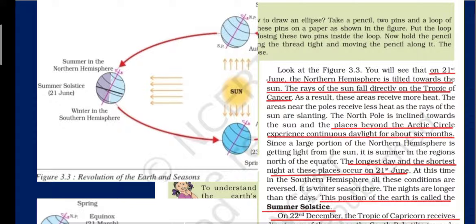On 21st June, the northern hemisphere is tilted towards the sun. The rays of the sun fall directly on the Tropic of Cancer; as a result, these areas receive more heat. As you can see, I have drawn the equator dividing the earth into the northern and southern hemispheres. On 21st June, the northern hemisphere is tilted more towards the sun than the southern hemisphere, and the sun rays fall directly on the Tropic of Cancer.